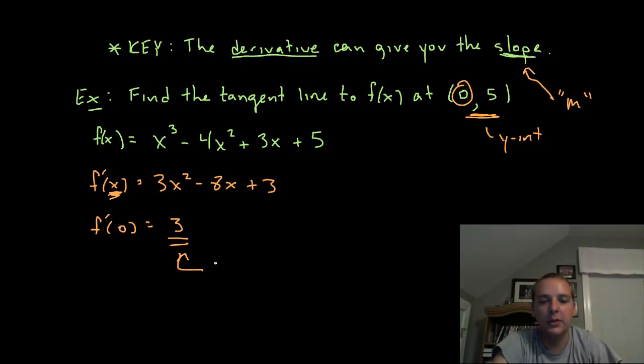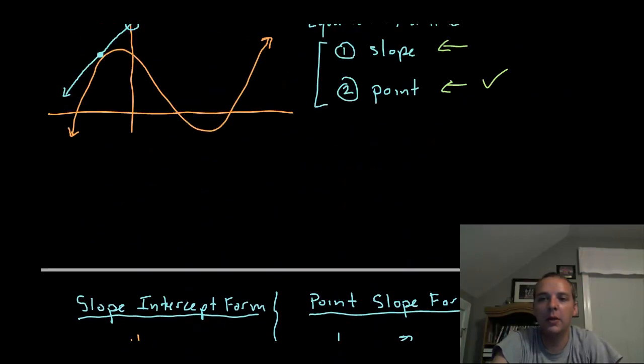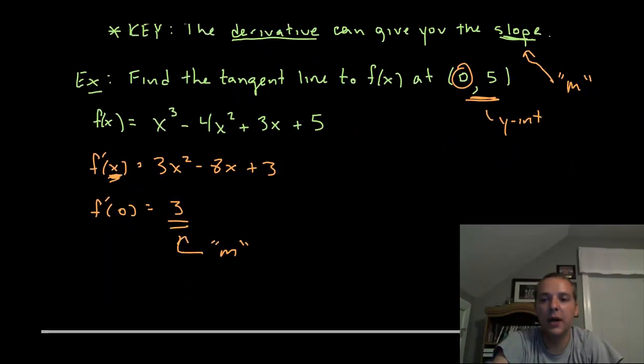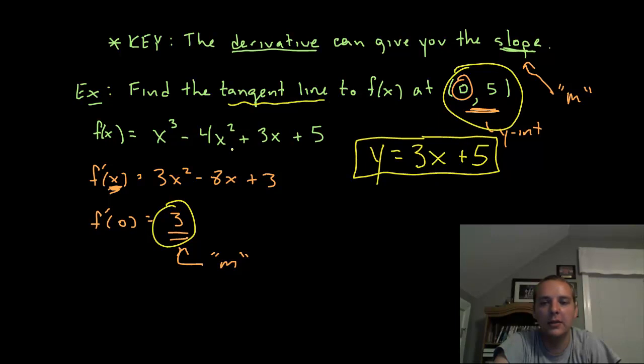So here we want the slope at 0, and so we plug it in and we get 3. Now this 3 represents the m or the slope of my tangent line at the given point right here. Now the point that we needed, remember back up here at the beginning we needed the slope and a point. The point is given, the point is provided for us more often than not. So I've got both of these here and I'm ready to write my answer. So my final answer would be y equals mx plus b.